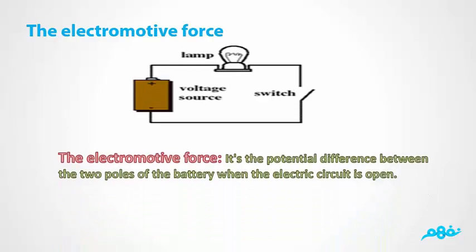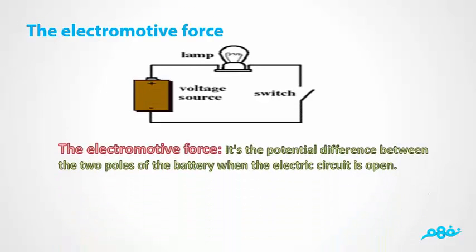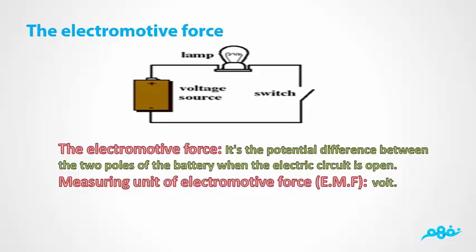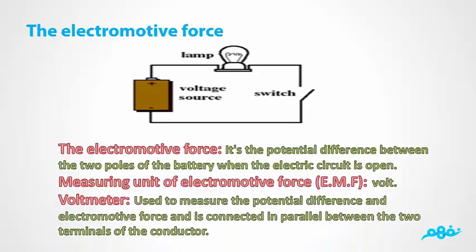Electromotive force (EMF): EMF is the potential difference between the two poles of the battery when the electric circuit is open and no current passes. EMF is measured in volts. The voltmeter (V) measures both potential difference and EMF — connected in parallel between two terminals of a conductor to measure potential difference, or connected in parallel between the two poles of a battery to measure the electromotive force when the circuit is open.